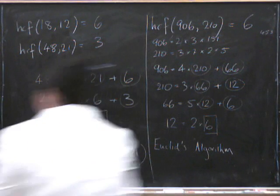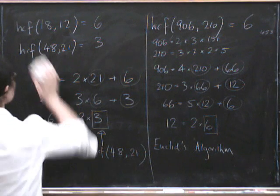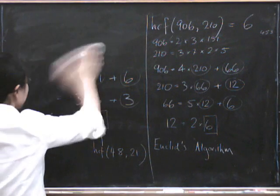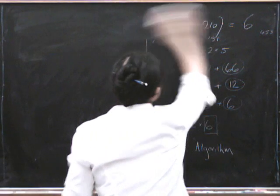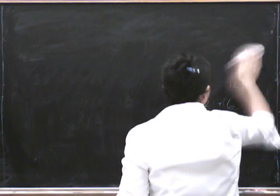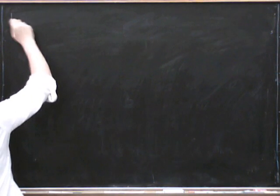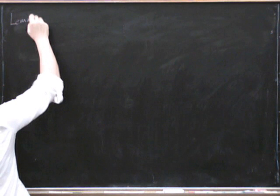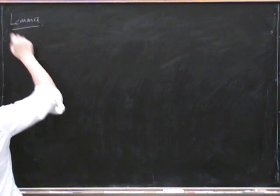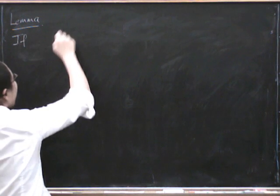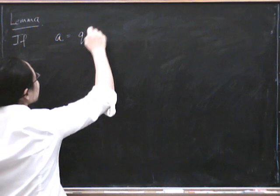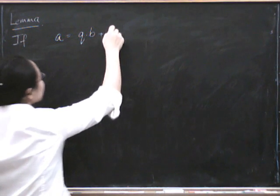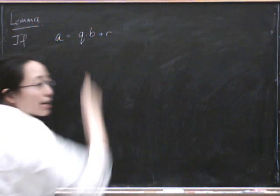So let's try and prove that that really does work. Let's prove that that really does work. So the claim, or maybe this is a little lemma, that if A equals Q times B plus the remainder,